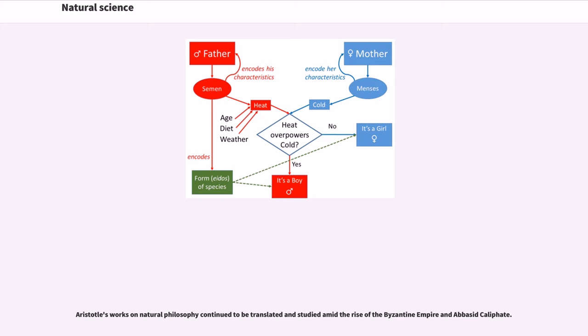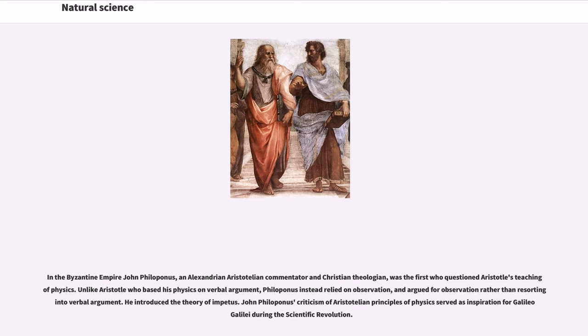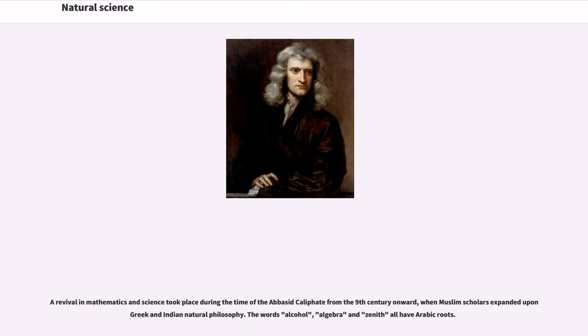Aristotle's works on natural philosophy continued to be translated and studied amid the rise of the Byzantine Empire and Abbasid Caliphate. In the Byzantine Empire, John Philoponus, an Alexandrian Aristotelian commentator and Christian theologian, was the first who questioned Aristotle's teaching of physics. Unlike Aristotle who based his physics on verbal argument, Philoponus instead relied on observation, and argued for observation rather than resorting to verbal argument. He introduced the theory of impetus. John Philoponus' criticism of Aristotelian principles of physics served as inspiration for Galileo Galilei during the scientific revolution. A revival in mathematics and science took place during the time of the Abbasid Caliphate from the 9th century onward, when Muslim scholars expanded upon Greek and Indian natural philosophy. The words alcohol, algebra and zenith all have Arabic roots.